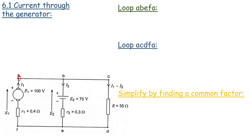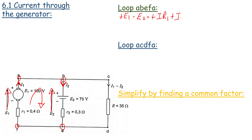Our first loop is loop A-B-E-F-A. We always work in a clockwise direction, so E1 is positive and E2 is negative. I1 is in a clockwise direction and I2 is also clockwise. So we have: +E1 - E2 = +I1·R1 + I2·R2. Substituting: 100 - 75 = 25 volts, giving us 0.4·I1 + 0.3·I2.